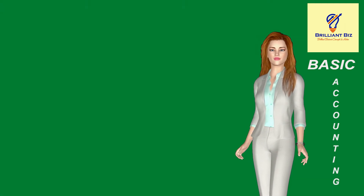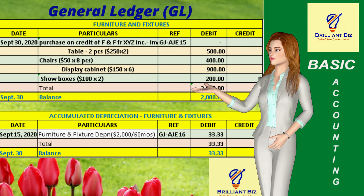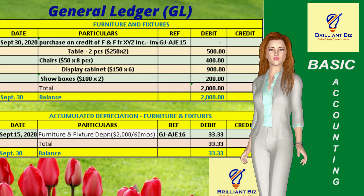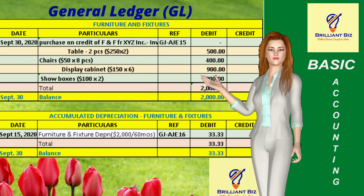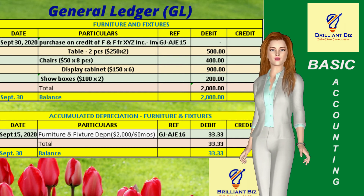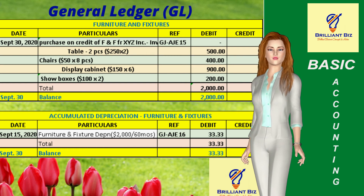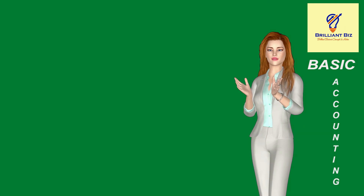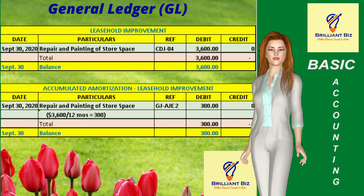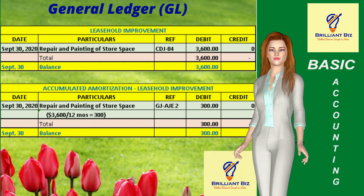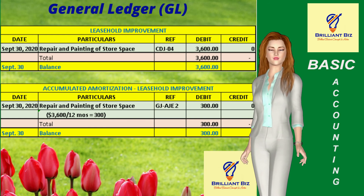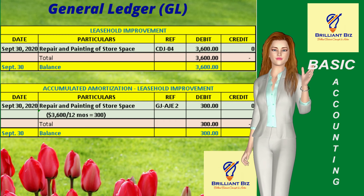This is the general ledger of the furniture and fixtures account, in which items are listed in detail such as tables, chairs, display cabinets, and show boxes. Below is the general ledger of the accumulated depreciation of this furniture and fixtures account, which represents the total depreciation expenses. This is the general ledger of the leasehold improvement account, which represents the cost of repair and painting of the leased store space, estimated to last for one year. Below is the general ledger of the accumulated amortization for this leasehold improvement account, which represents total amortization expenses.